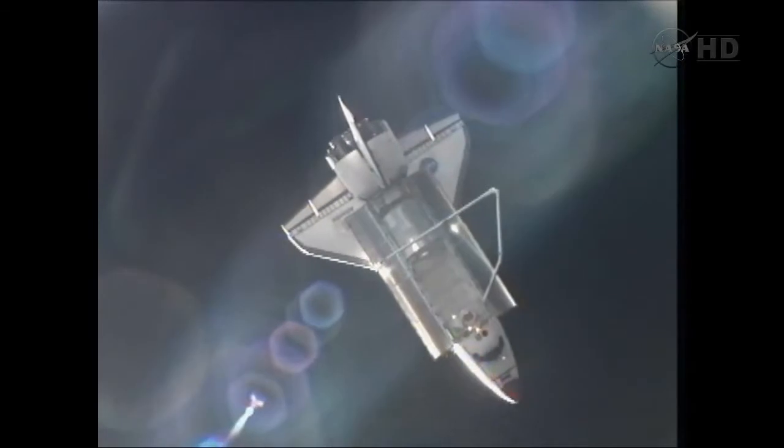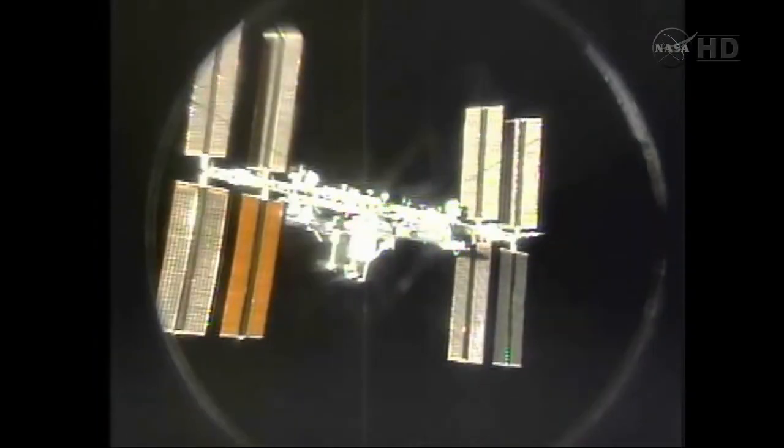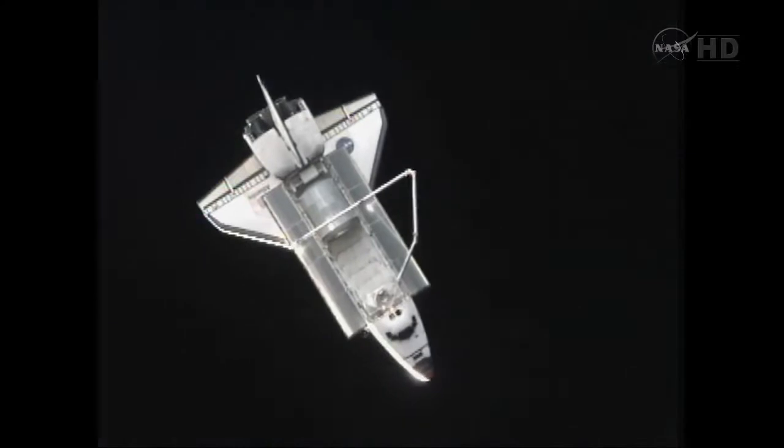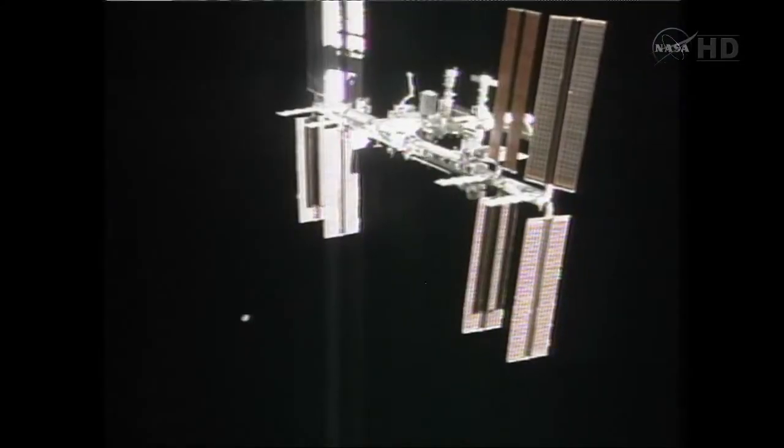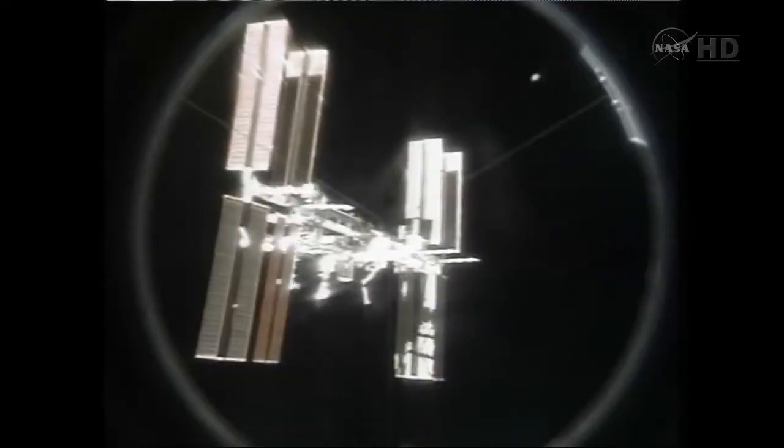The first docking of Atlantis to the International Space Station came in May of 2000, two months prior to the launching of the Zvezda service module, the first living quarters for the International Space Station.